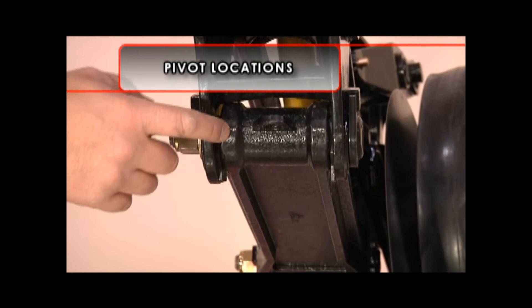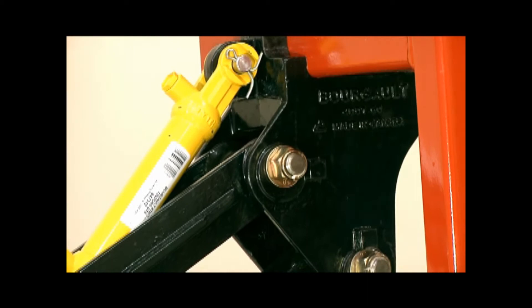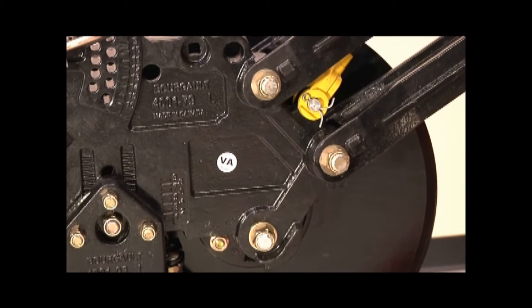In most of the primary pivots, Bourgault utilizes maintenance-free composite bushings. Bourgault incorporates hardened bushings on the cylinder pivots, which are also maintenance-free.